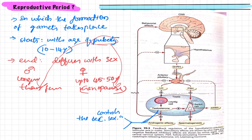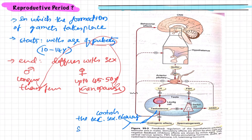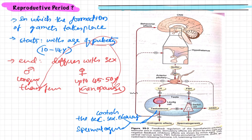Testosterone has many effects called androgenic effects — it controls secondary sexual characters and also has a role in spermatogenesis. Meanwhile, Sertoli cells have a positive role in spermatogenesis and also release a substance known as inhibin. This inhibin provides negative feedback regulation by inhibiting the anterior pituitary.